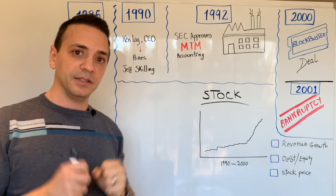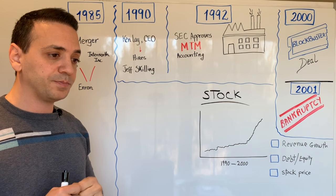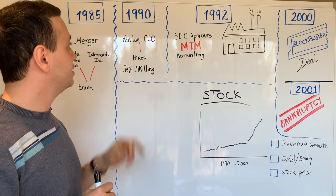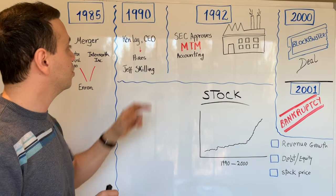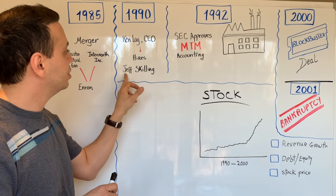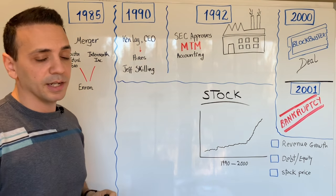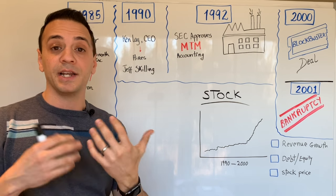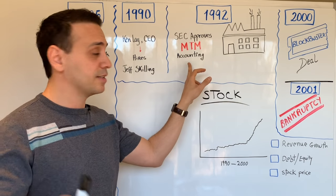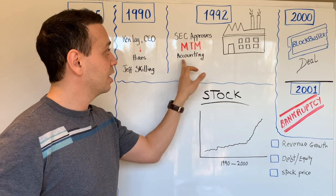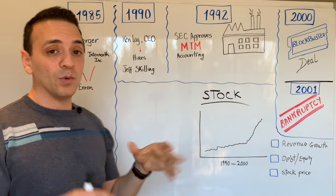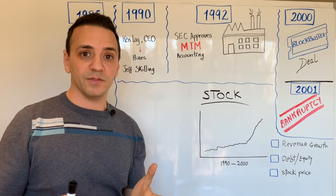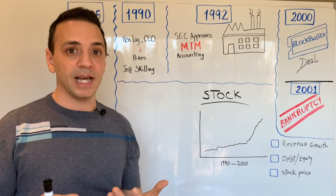Then in 1990, Ken Lay, who was still the CEO, hired Jeff Skilling. Jeff Skilling will become really important in the story later because he becomes the architect of an accounting technique which we'll discuss — mark-to-market. Jeff Skilling was at the time one of the partners at McKinsey and Company, which was the consulting company advising Enron.